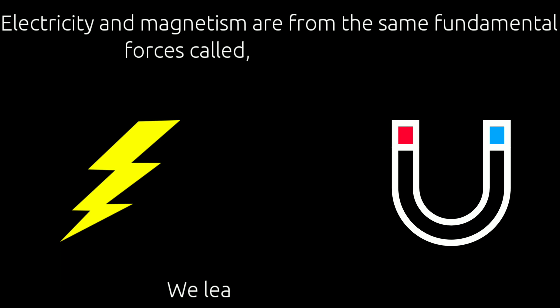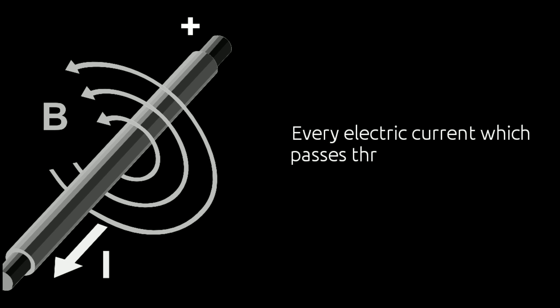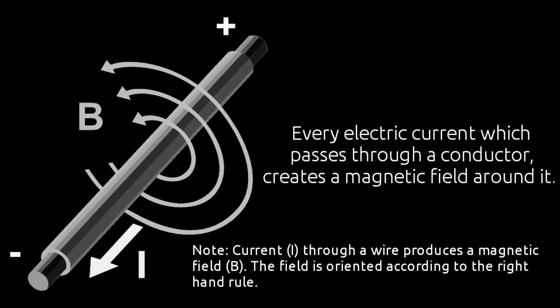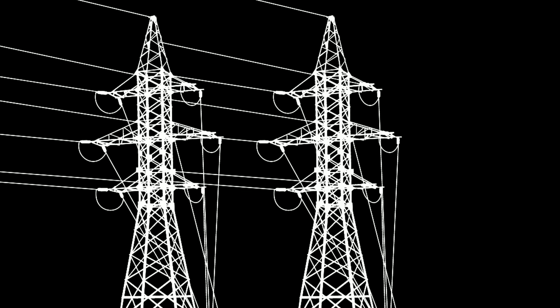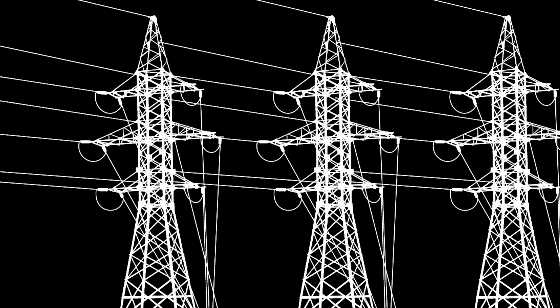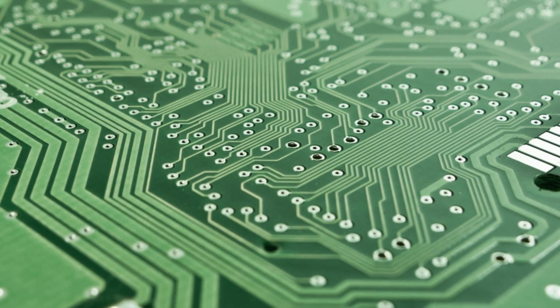we found that electricity and magnetism come from the same fundamental force called electromagnetism. Every electric current passing through a conductor creates a magnetic field around it. This happens with huge high-voltage power lines that carry electricity across great distances, to tiny traces on a motherboard.